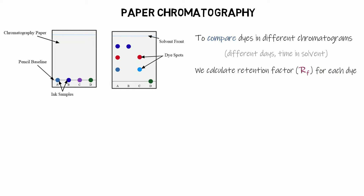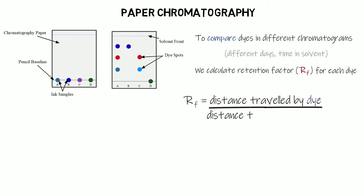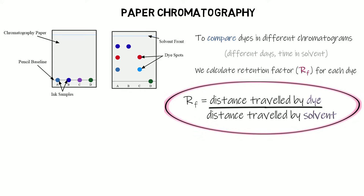The equation we use is: RF equals the distance travelled by the dye (the spots) divided by the distance travelled by the solvent (the solvent front). Both distances are measured from the pencil baseline where you place your original ink samples.